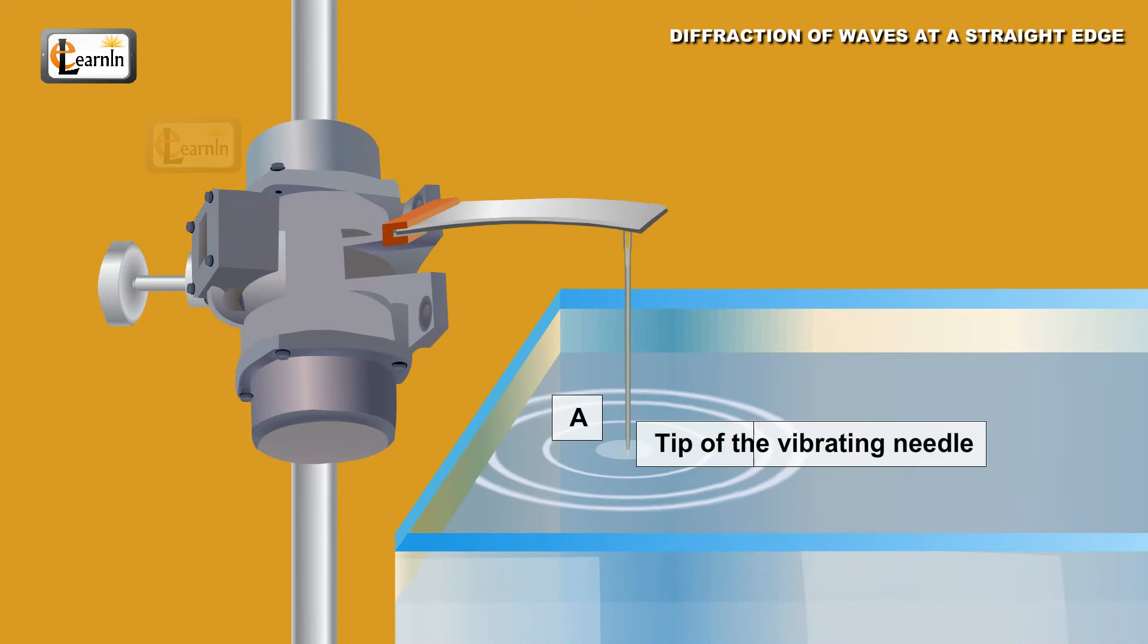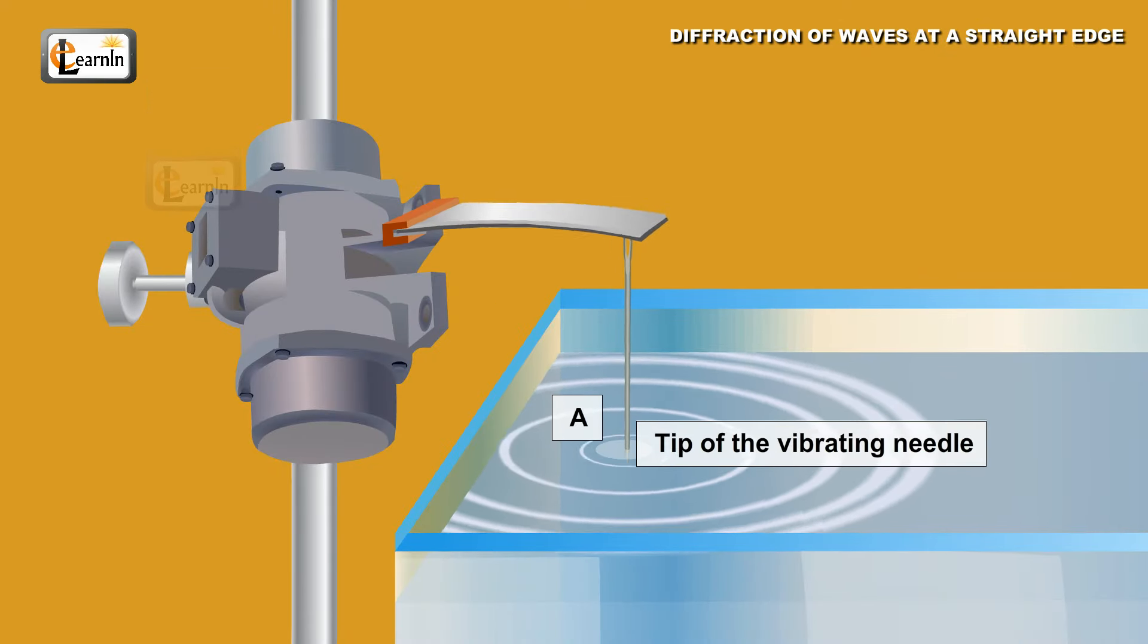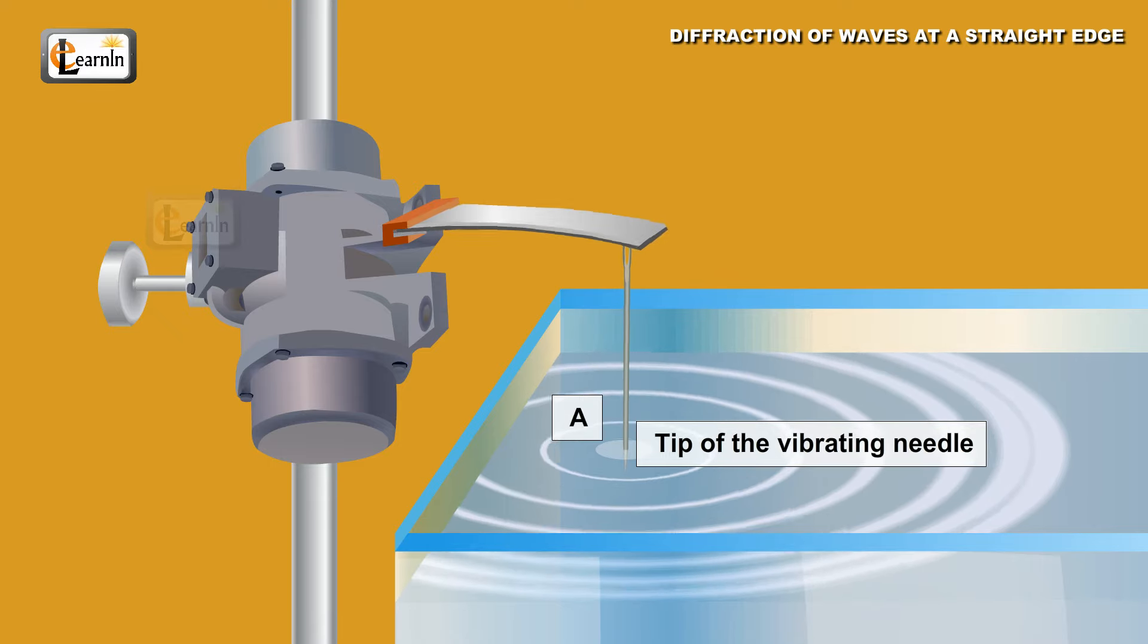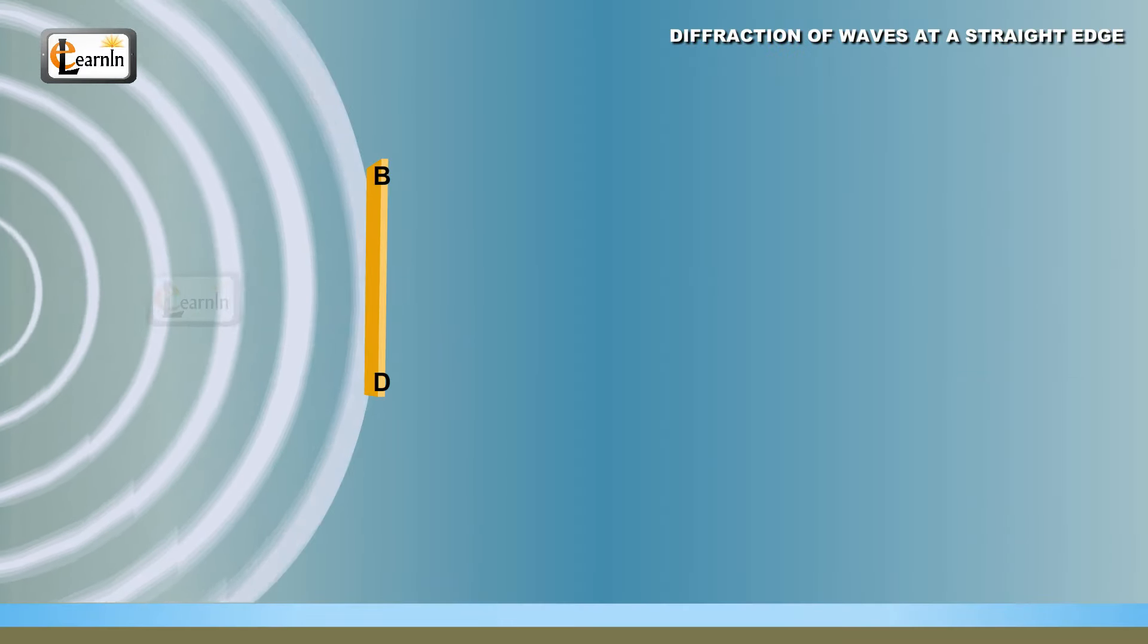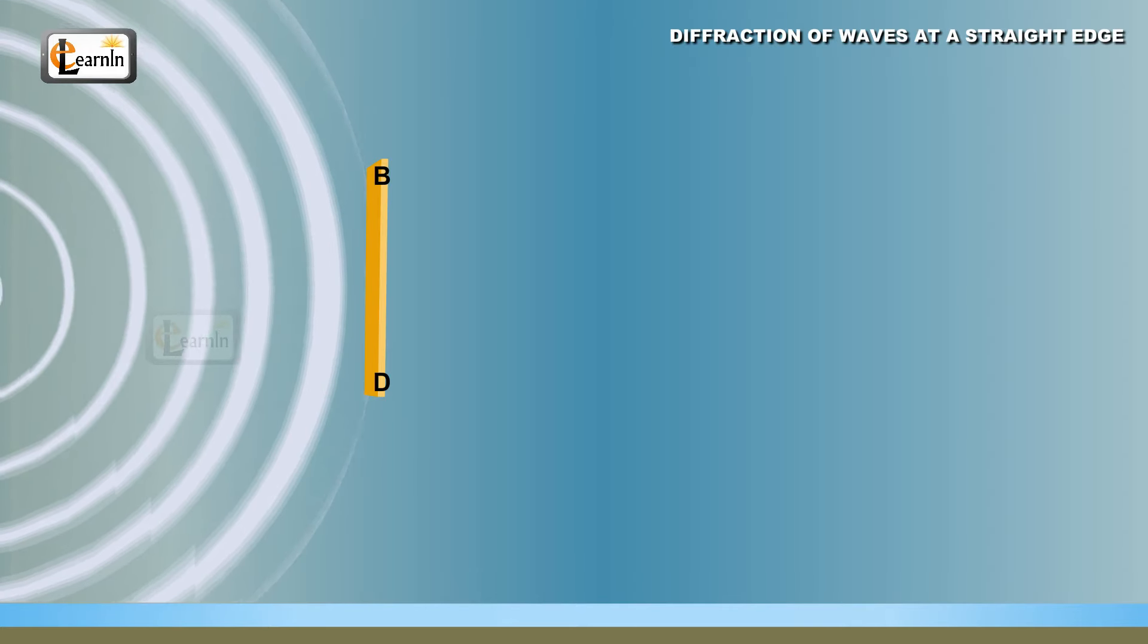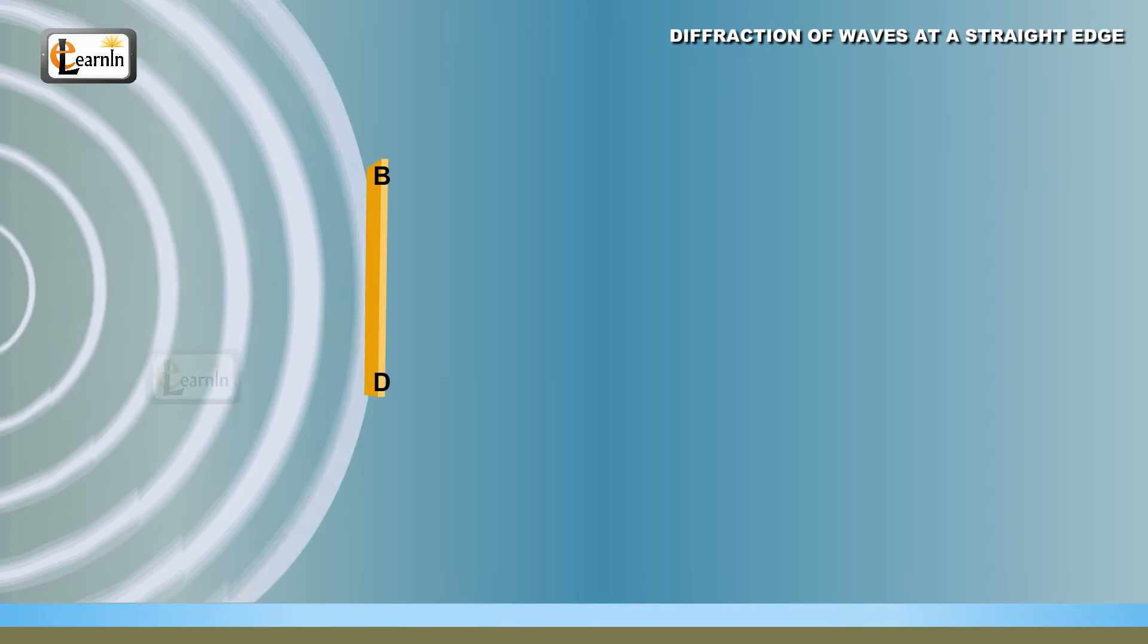Here, A is the tip of the vibrating needle and behaves as the source of the waves which spread out and travel towards the scale BD. The waves spread out equally in all directions until they reach the straight edge BD.